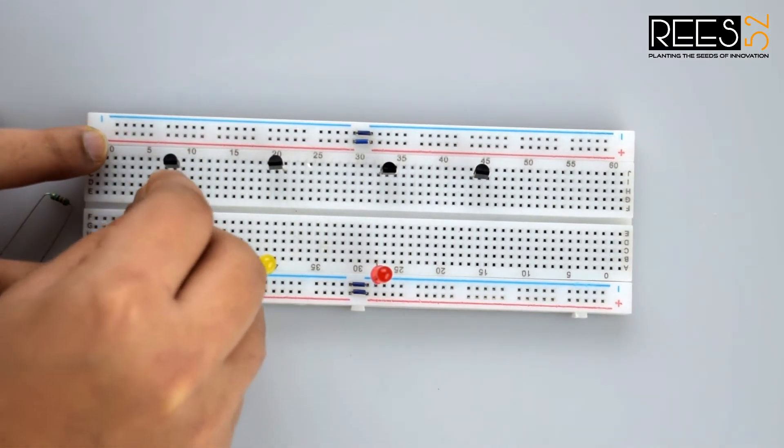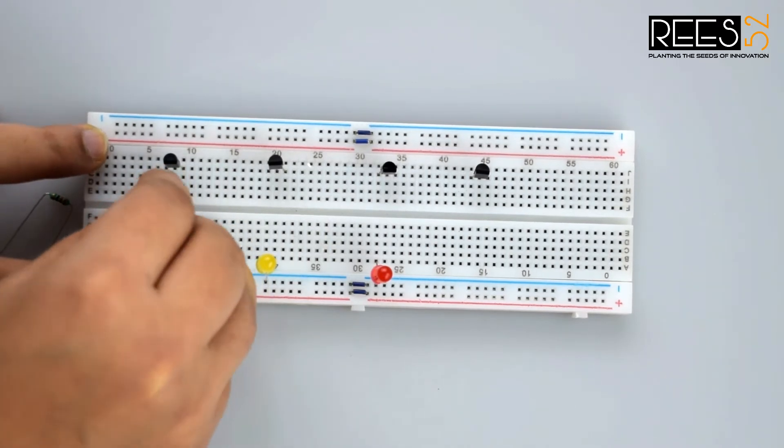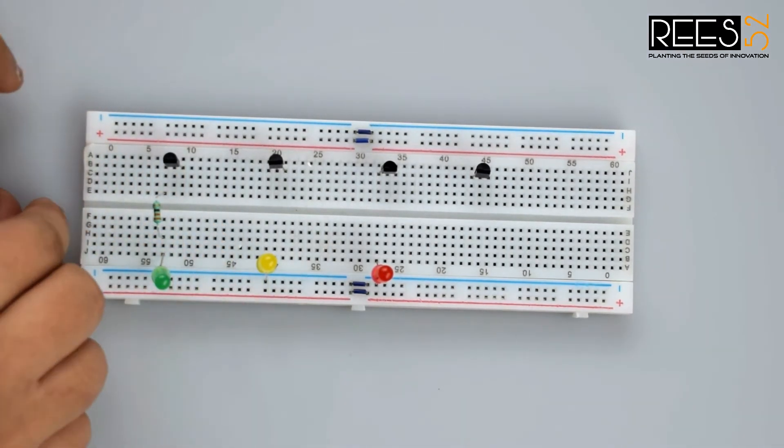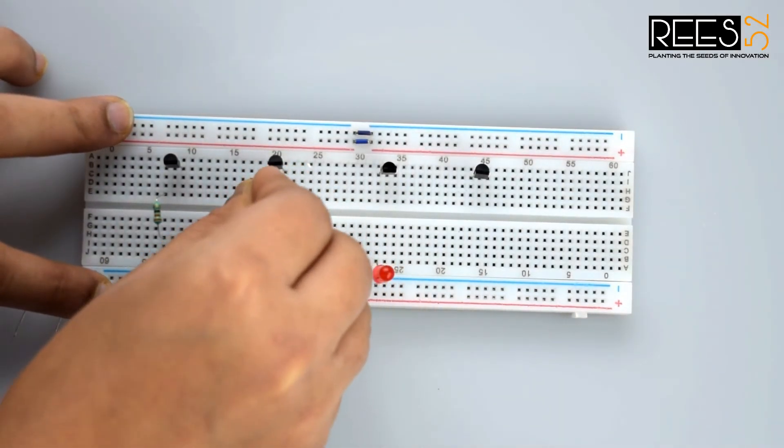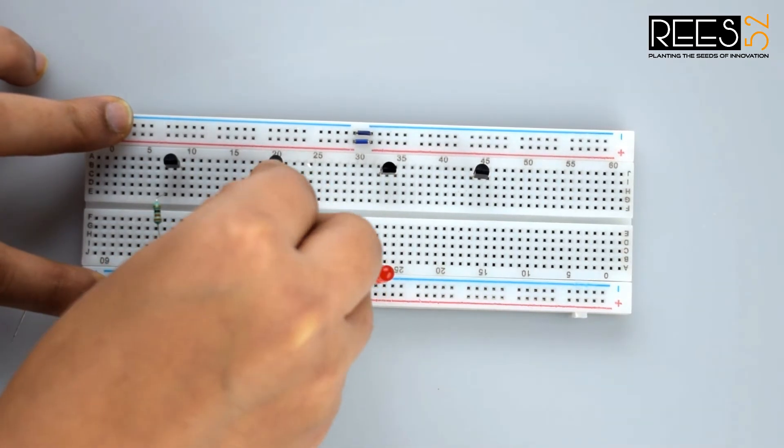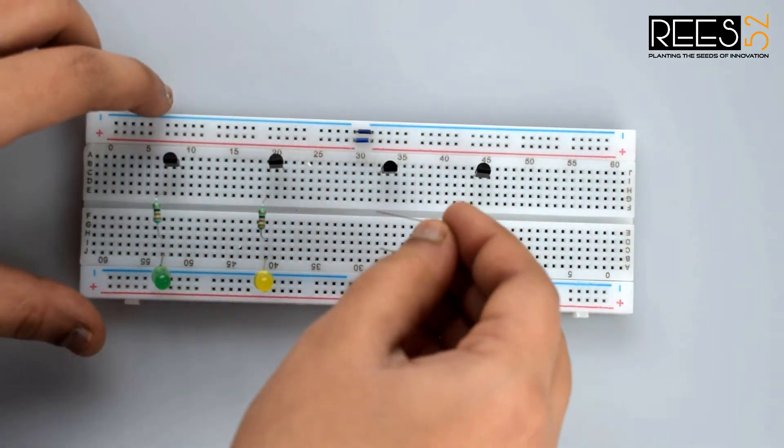The LED must be in different row. Now connect it with 330 ohm resistor. Connect the transistor Q2 and Q3 similarly.